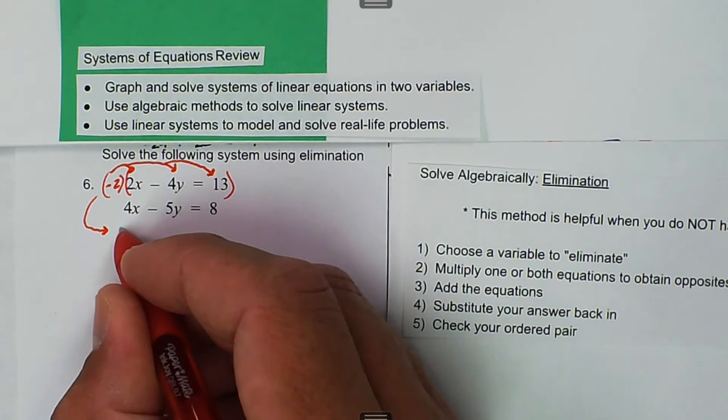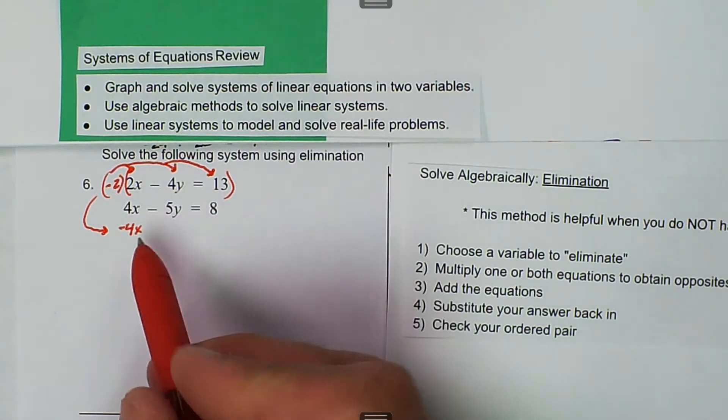Negative 2 times 2 is negative 4x. And that's why, right there, is why we multiply by negative 2.